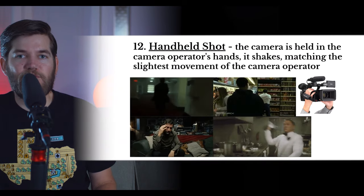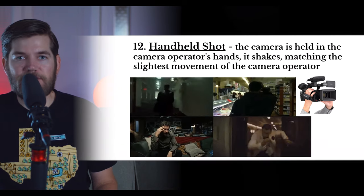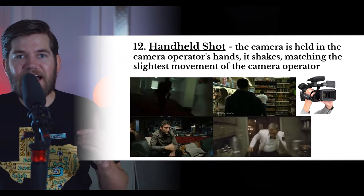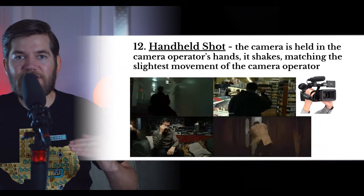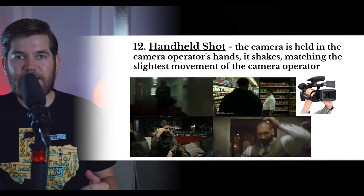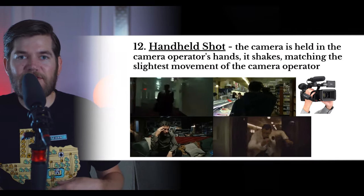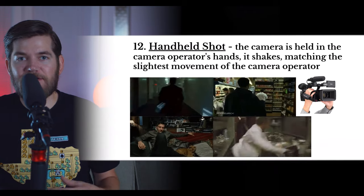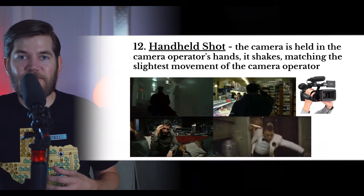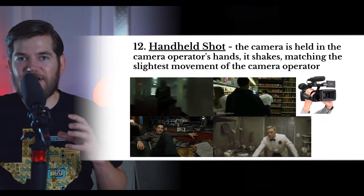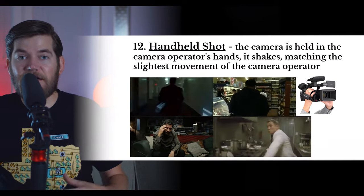Handheld camera movement can add a certain realism and energy to a shot. In the top two examples, it adds to the intensity of the moment as tension builds. In the bottom left example, the wobbly handheld movement adds to the intoxication of a character who has ingested drugs. In the bottom right, the shakiness adds to the intensity of a fight scene. However, if you overuse handheld camera movement for too many shots in a row, you can make your audience feel sick.